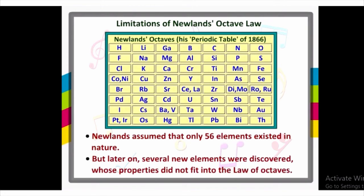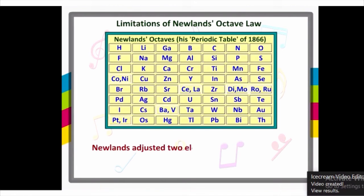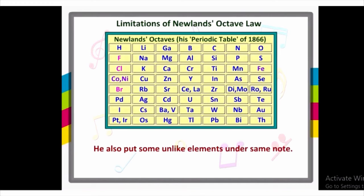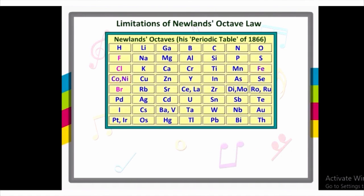Therefore, he adjusted two elements in the same slot to fit elements into his table, placing some unlike elements under the same notes. For example, cobalt and nickel are placed in the same slot and are placed in the same column as fluorine, chlorine, and bromine — which have very different properties from these elements.